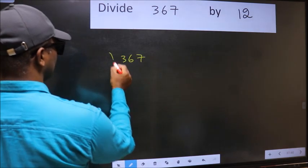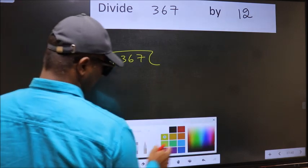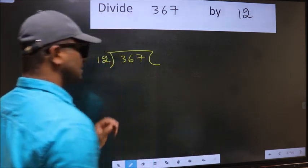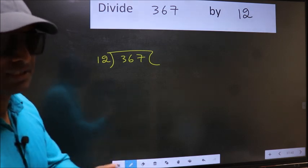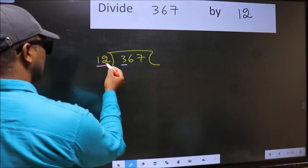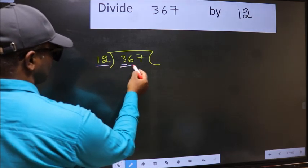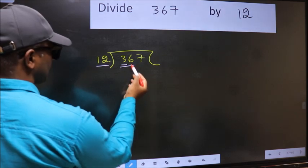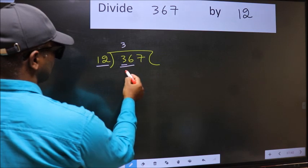367 and 12 here. This is your step 1. Next, here we have 3 and here 12. 3 is smaller than 12, so we should take two numbers, 36. When do we get 36 in 12 table? 12 times 3 is 36.